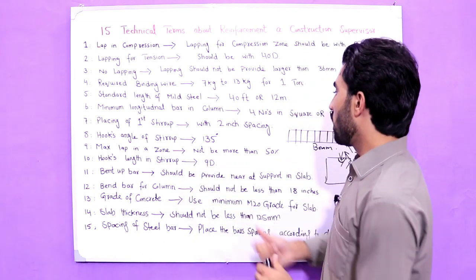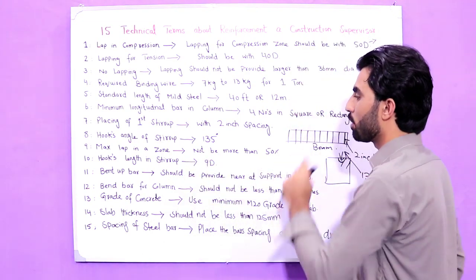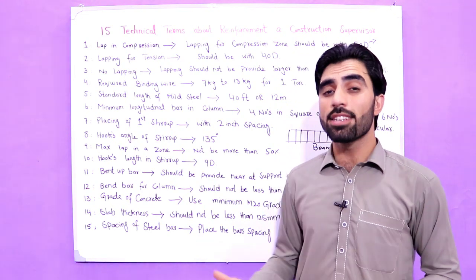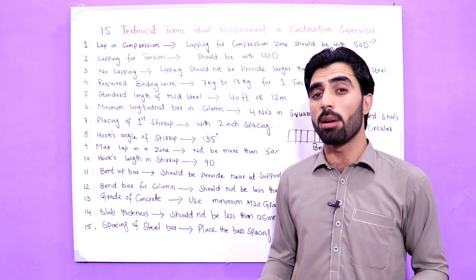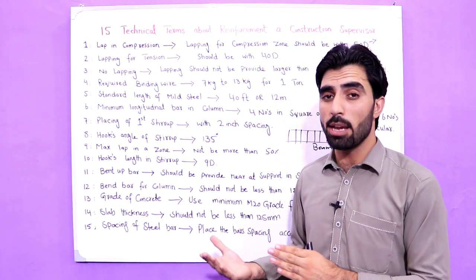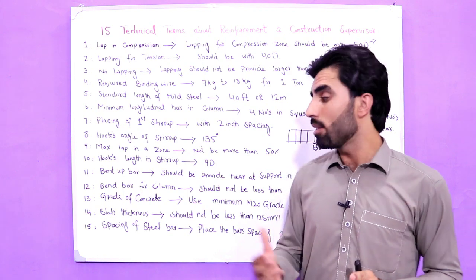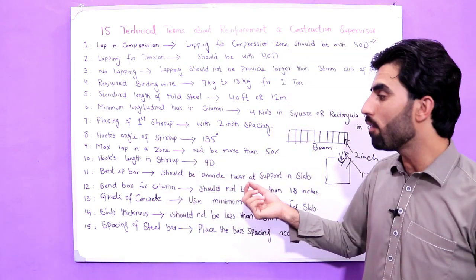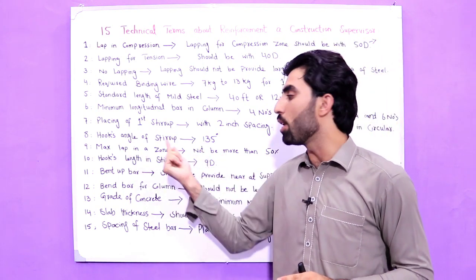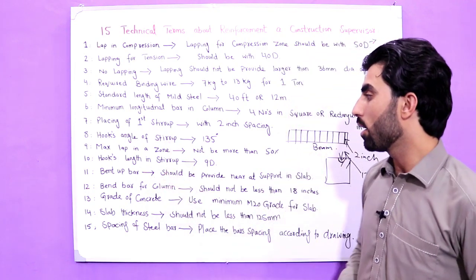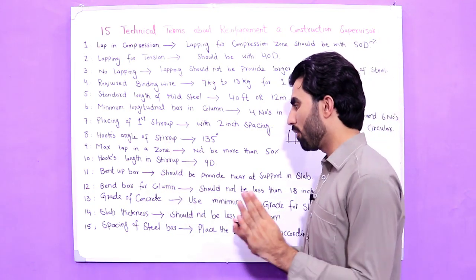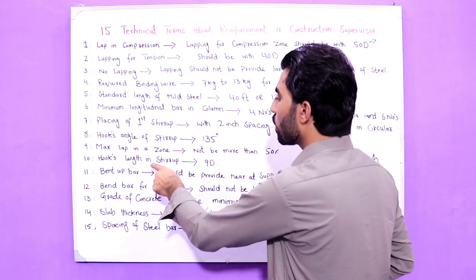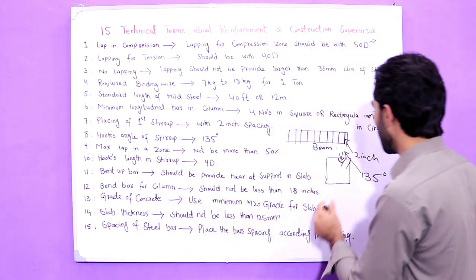The ninth term is maximum lapping in a zone. In an RCC slab or any other structure, specially for beams, columns, or slabs, we should not provide more than 50% lapping in a single zone, as this is dangerous for the structure.